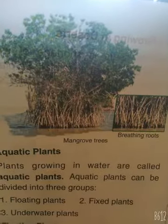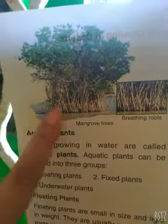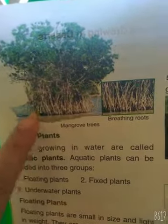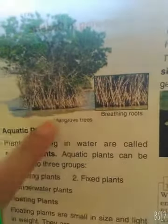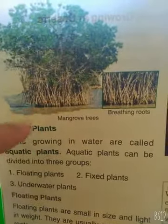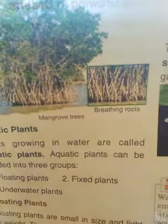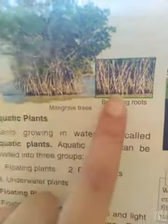I am going to show you a picture of these mangrove trees. Look at this — here you can see these roots are covered with water and soil, and they come out of the soil and water and breathe through it. That is why they are called breathing roots.